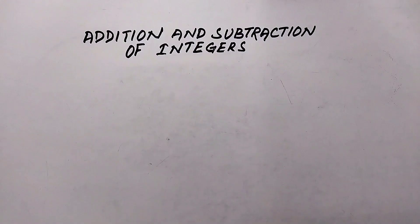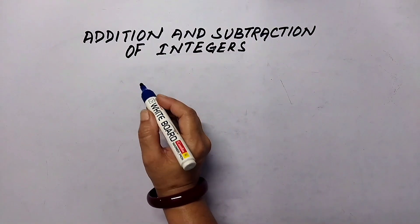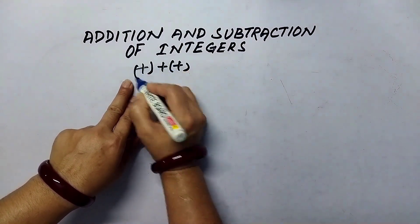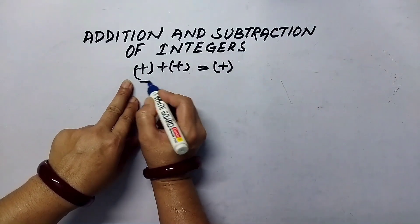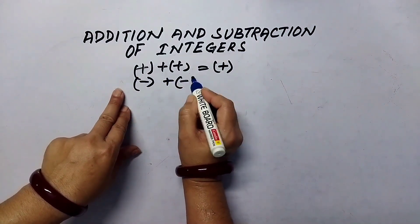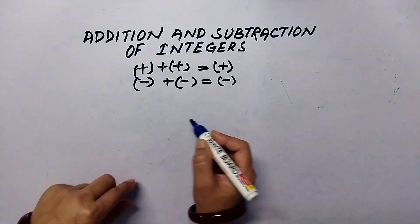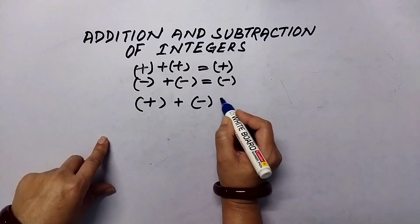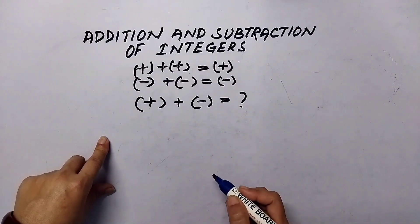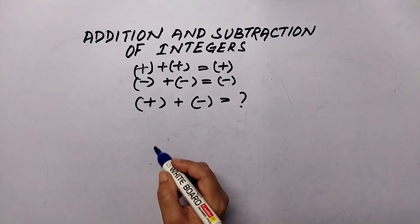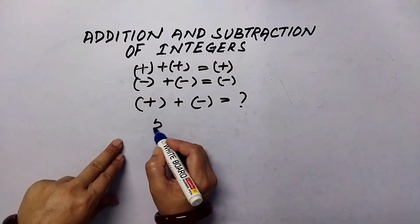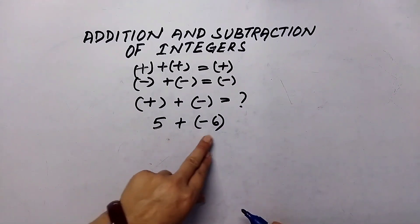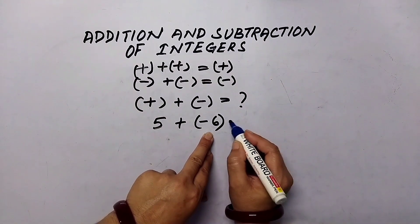So what have we learned? When adding two positive integers we get a positive integer, and when adding two negative integers we also get a negative integer. But when adding one positive and one negative integer, what should the sign and sum be? Let us take one example: five plus negative six.